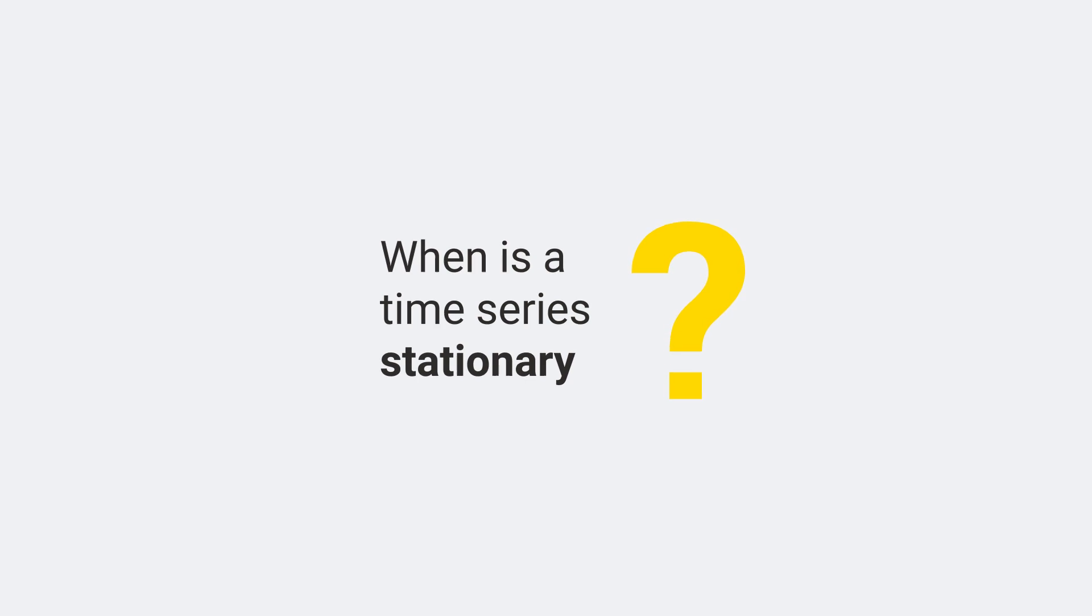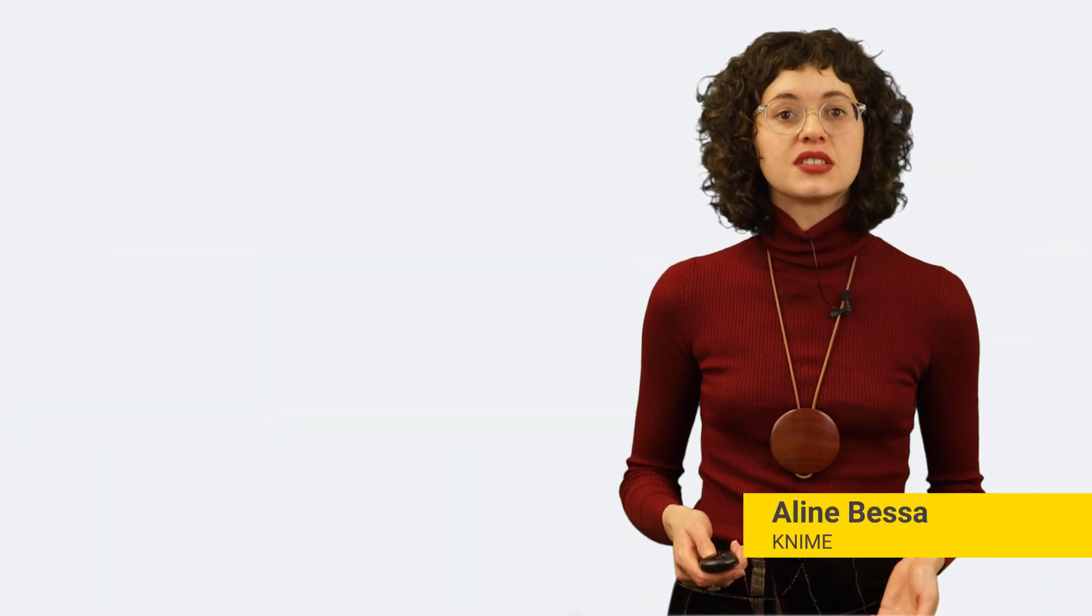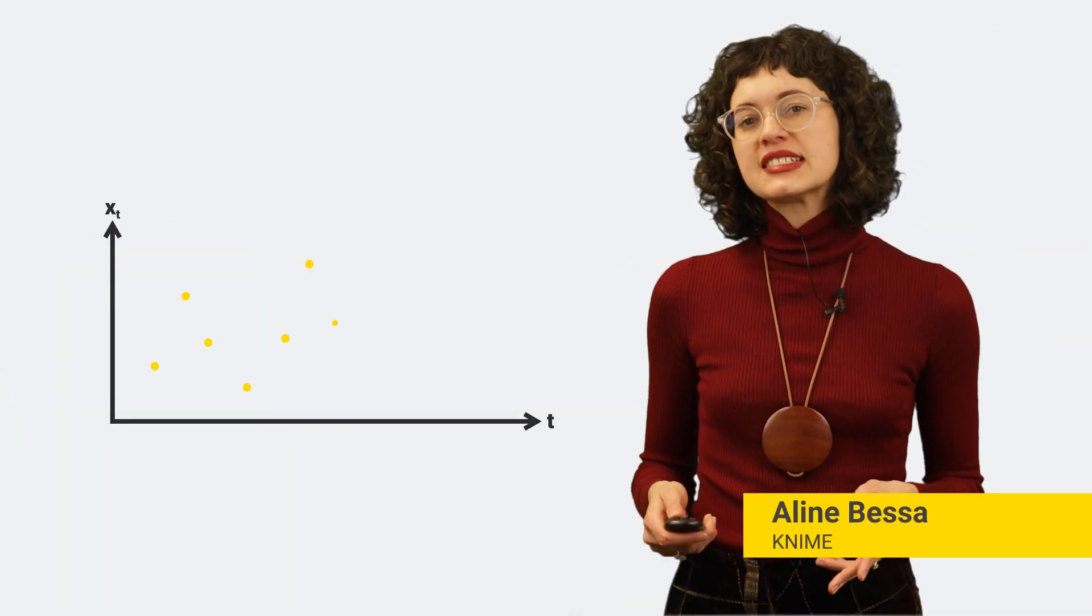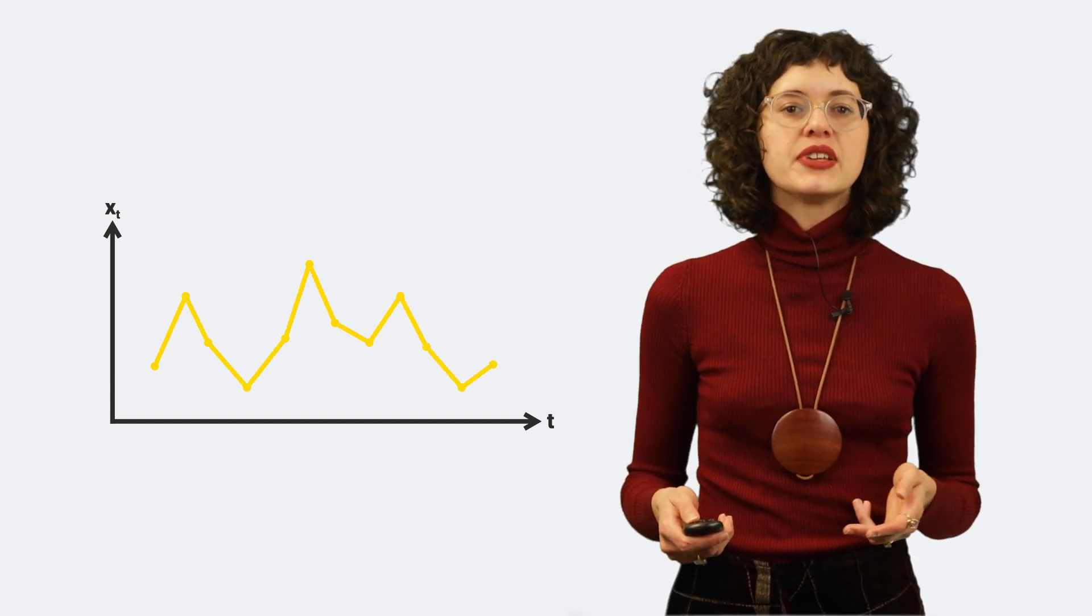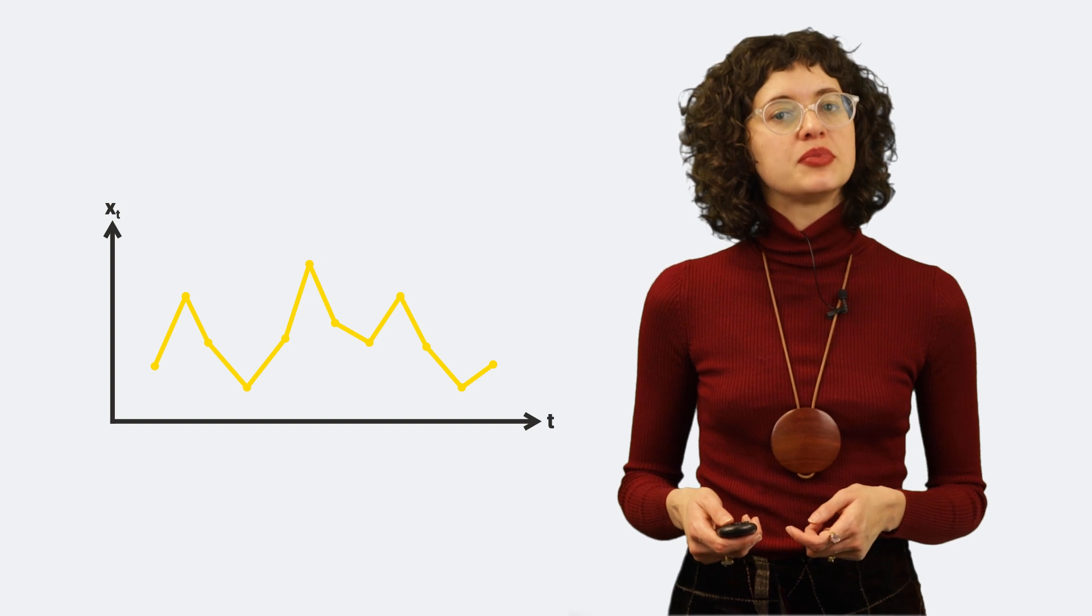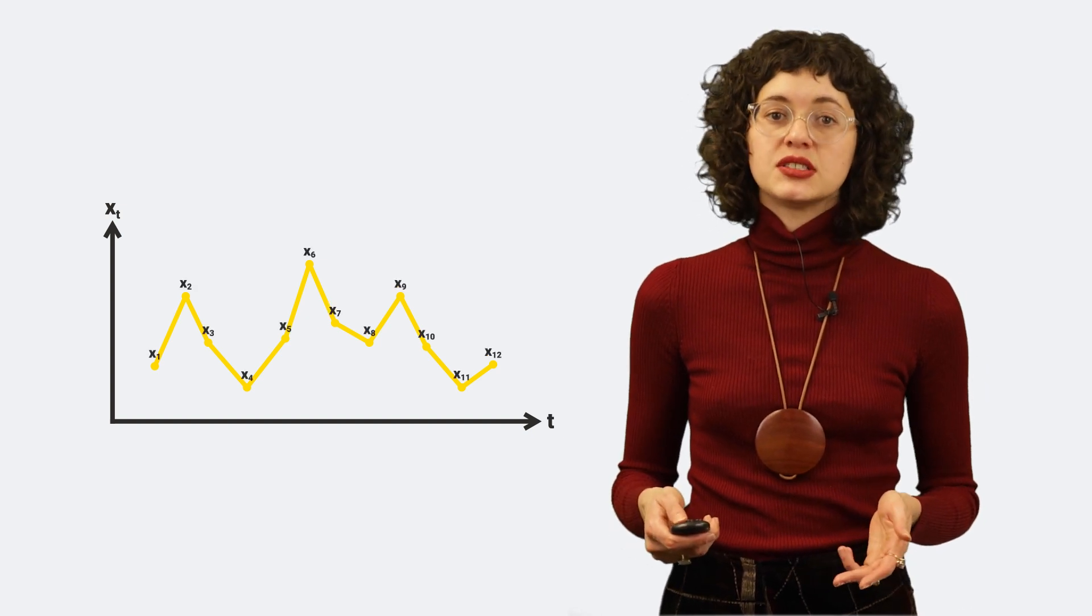When is a time series stationary? To answer this question, recall that a time series is a sequence of data points indexed in temporal order, and that the value of the data point associated with timestamp t can be seen as a sample of a random variable xt.